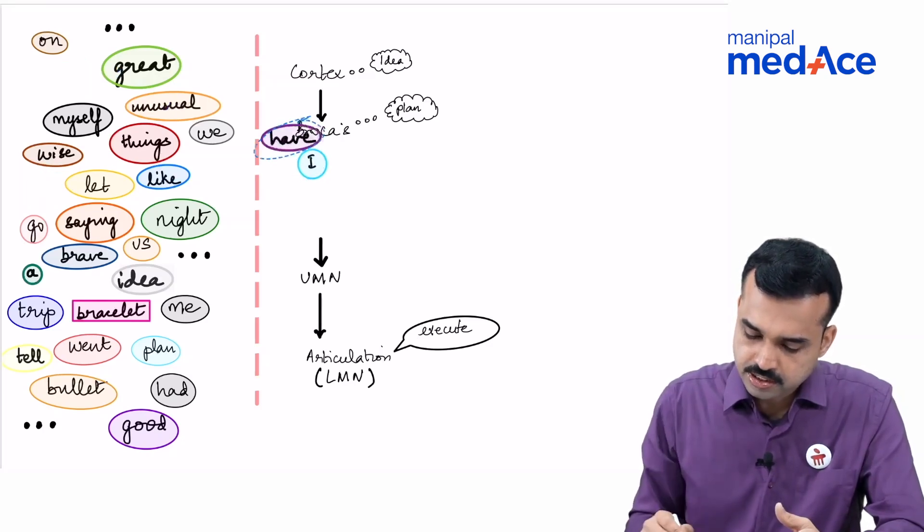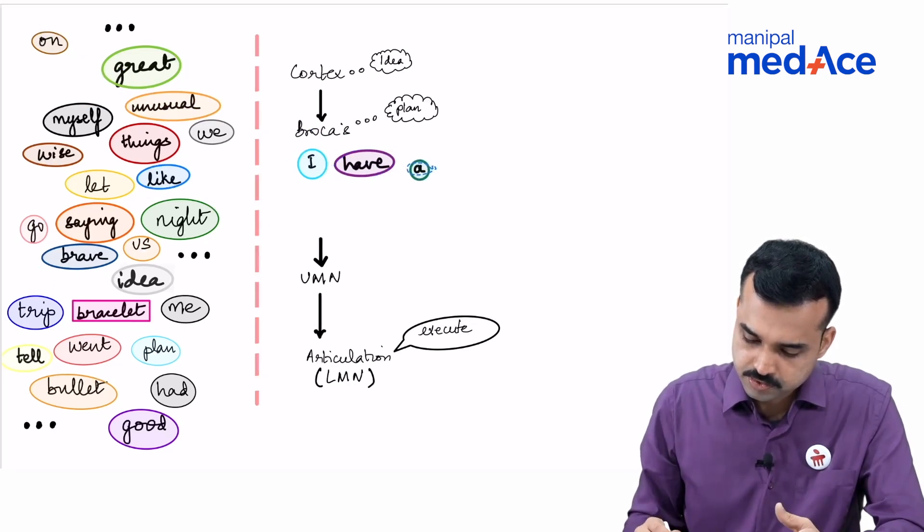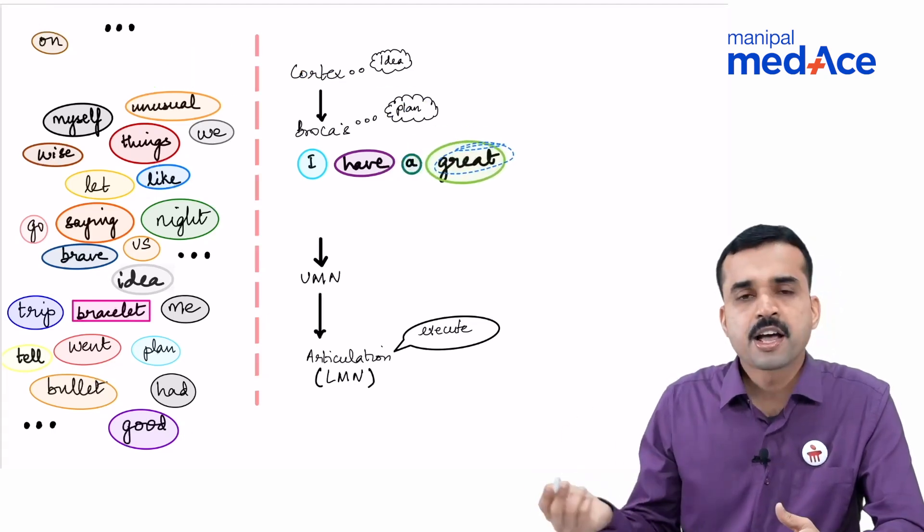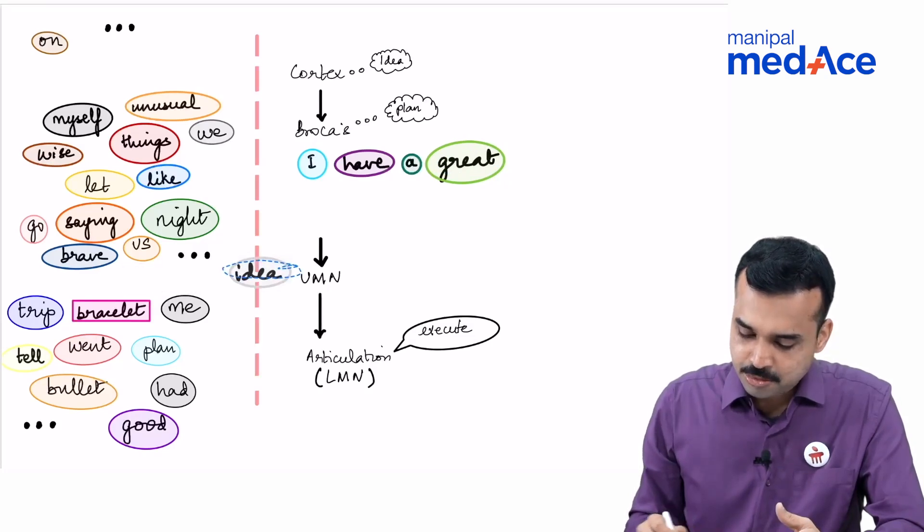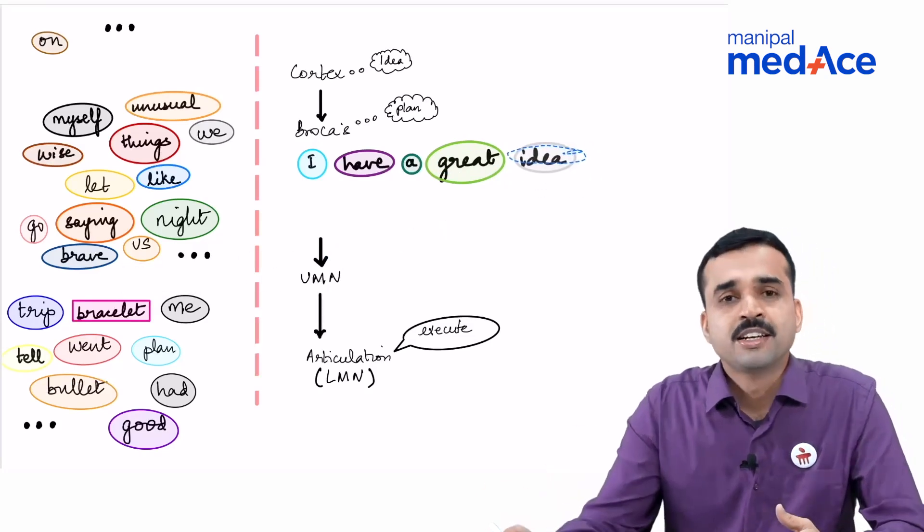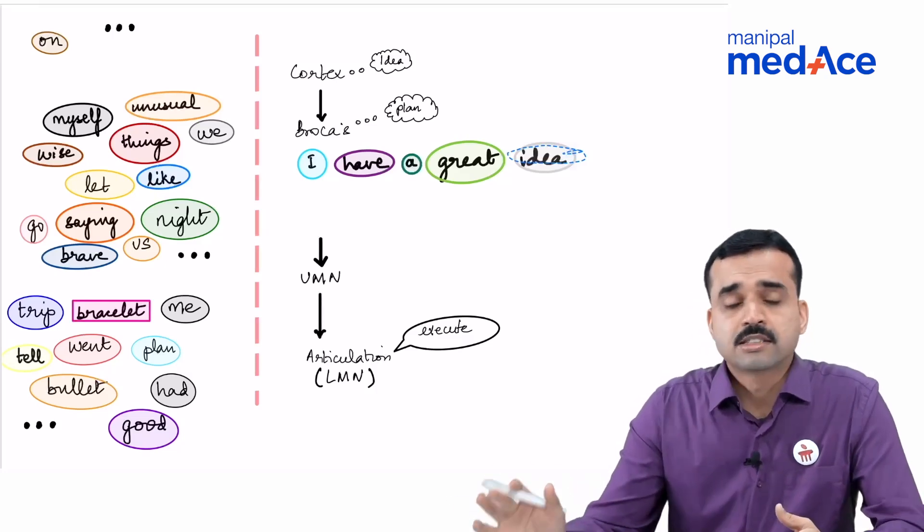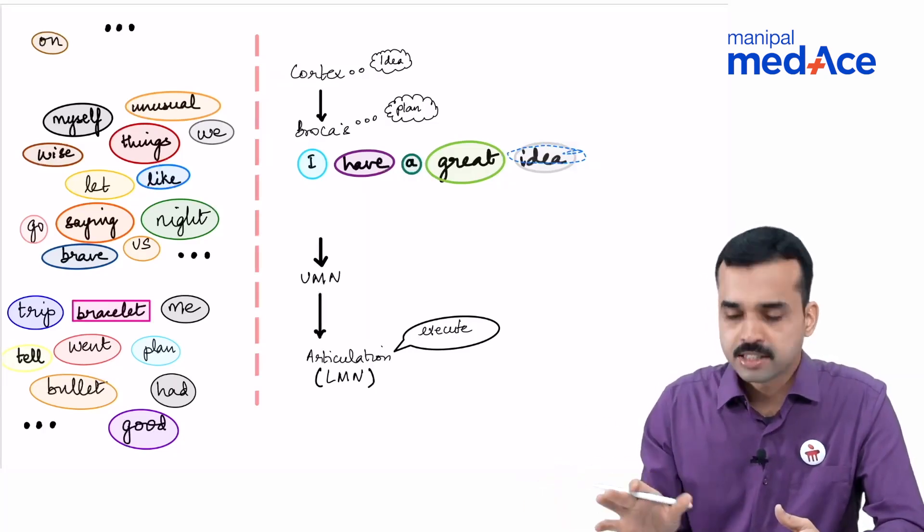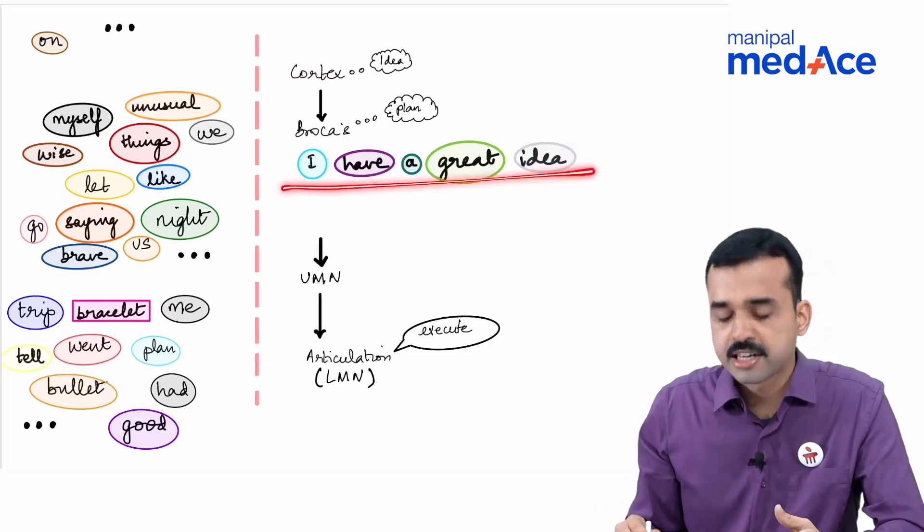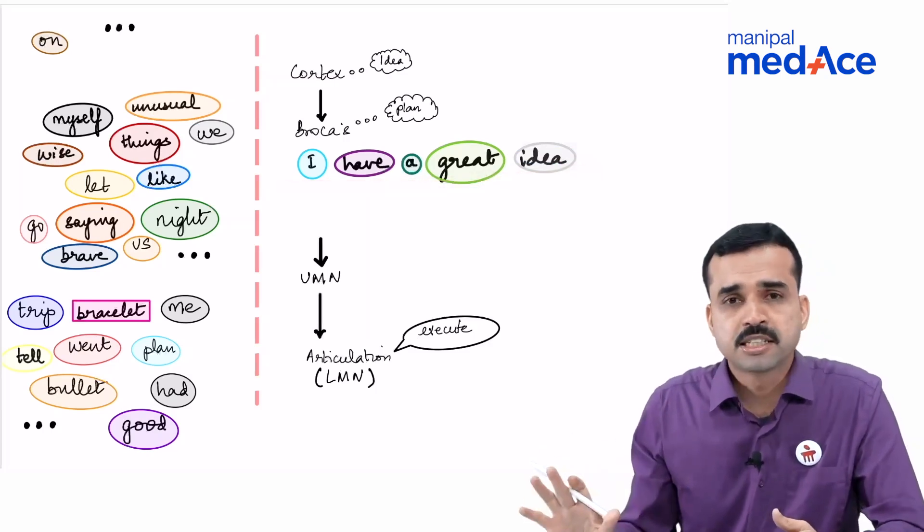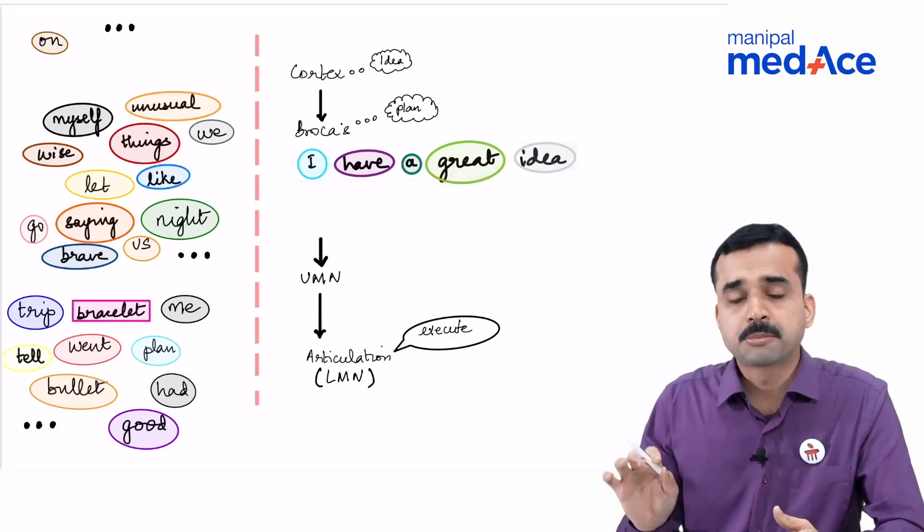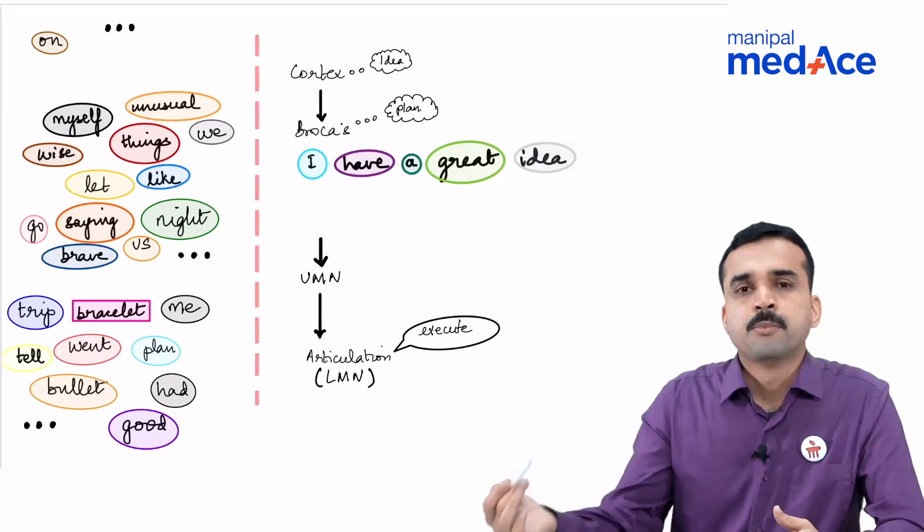It needs to select the right words, the right order. It cannot be that I can end up saying 'great idea I have.' Of course, sometimes colloquially we say that, but then it will not be the right grammar. I cannot say 'great, I have idea.' That also is not correct. So the order of the words also matters. That is known as syntax. The right order of the right words. This is required for expressing the language. 'I have a great idea.' Now this sounds the most appropriate grammatically and in terms of syntax. So I have not said 'I had an great idea' - that would have been grammatically incorrect. So grammar is also correct, the order, that means syntax, is also correct. So this is how a normal Broca's area would function.